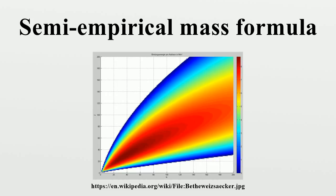This equation has five terms on its right-hand side. These correspond to the cohesive binding of all the nucleons by the strong nuclear force, a surface energy term, the electrostatic mutual repulsion of the protons, an asymmetry term and a pairing term.